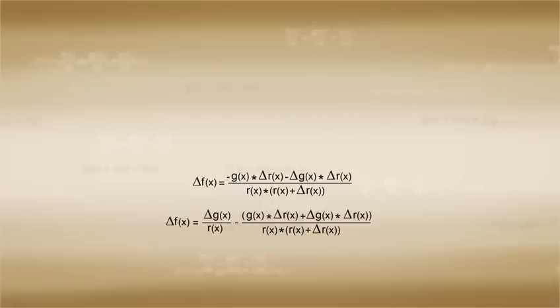After making sure that both denominators are equal and then adding the numerators together, we notice that the equation simplifies to delta f being delta g times r minus g times delta r all over r times r plus delta r.